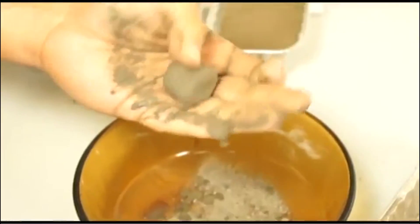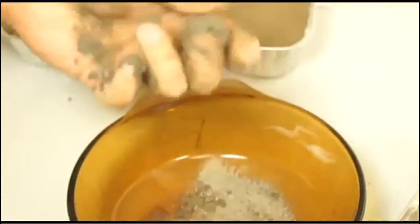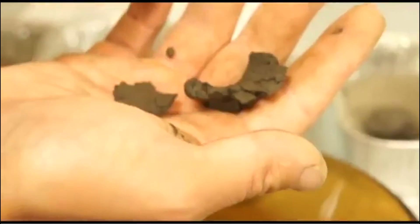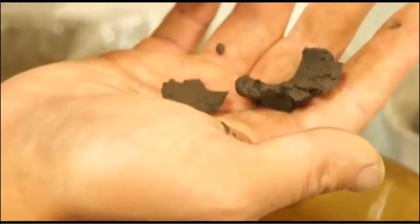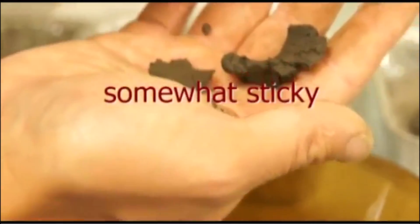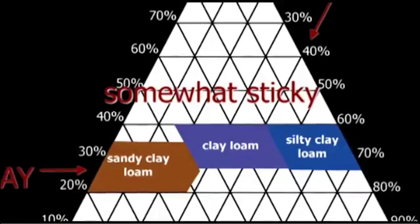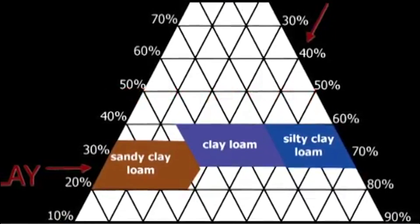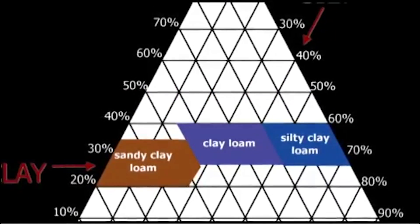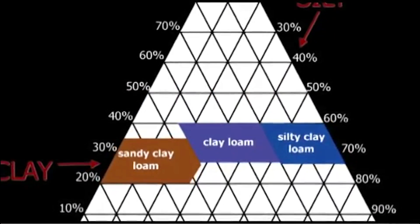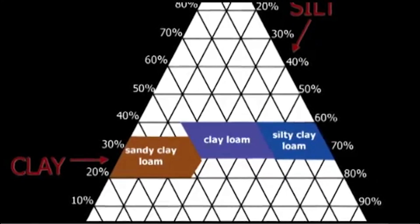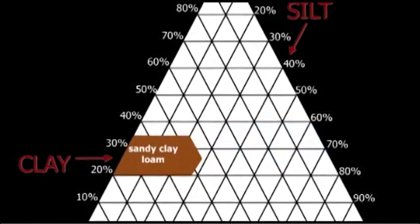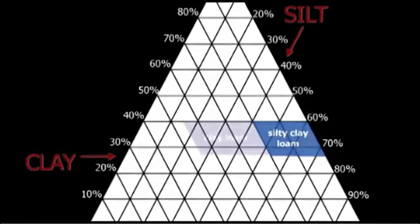If your soil forms a ball and a ribbon only 2-5 cm in length or is somewhat sticky, it will fall somewhere in the middle of the chart as a variety of clay loam. Rub it between your fingers to judge whether it is sandy or silty or in between.